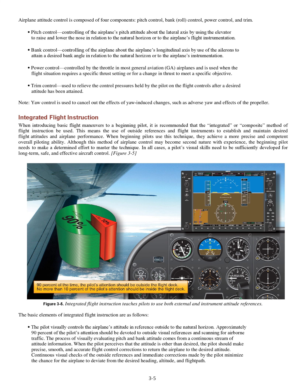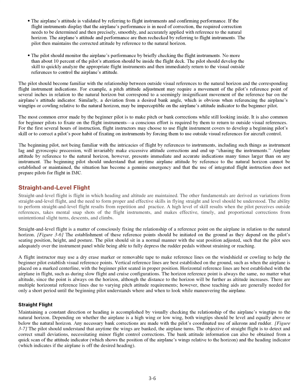The basic elements of integrated flight instruction are as follows. The pilot visually controls the airplane's attitude by reference outside to the natural horizon. Approximately 90% of the pilot's attention should be devoted to outside visual references and scanning for airborne traffic. The process of visually evaluating pitch and bank attitude comes from a continuous stream of attitude information. When the pilot perceives that the attitude is other than desired, the pilot should make precise, smooth, and accurate flight control corrections to return the airplane to the desired attitude. Continuous visual checks of the outside references and immediate corrections minimize the chance for the airplane to deviate from the desired heading, altitude, and flight path. The airplane's attitude is validated by referring to flight instruments and confirming performance.